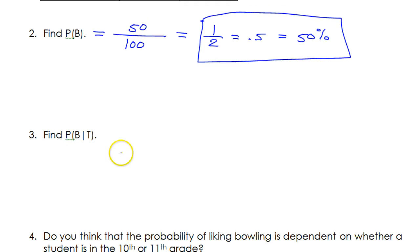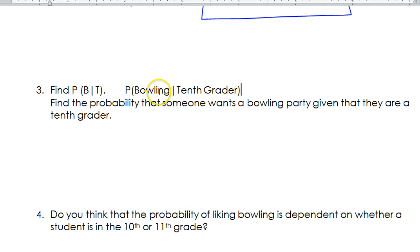Now, notice the difference between number two and number three. We're still asking for the probability of picking someone who wants a bowling party, that's the B. But, let me write this out in words. So, this is the most compact form with just single letters, but expanding it slightly, probability of bowling given 10th grader. Writing it out as a sentence, it means find the probability that someone wants a bowling party, given that they are a 10th grader.